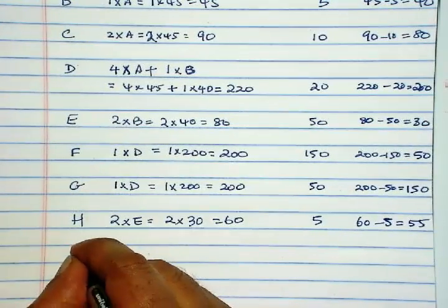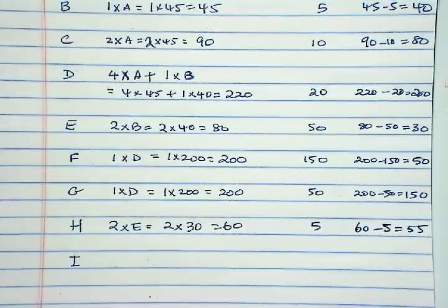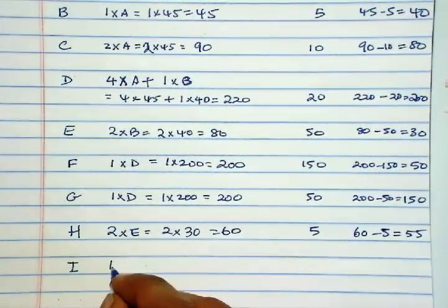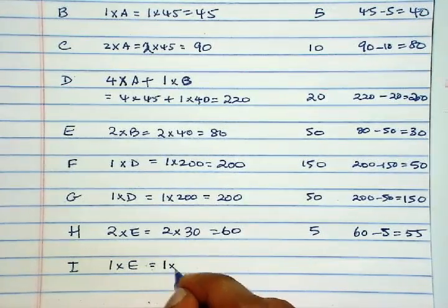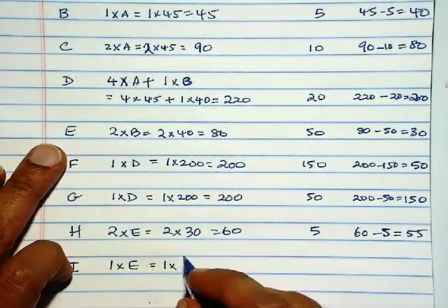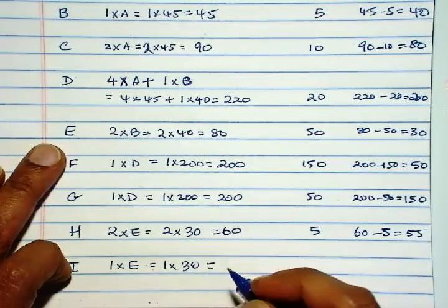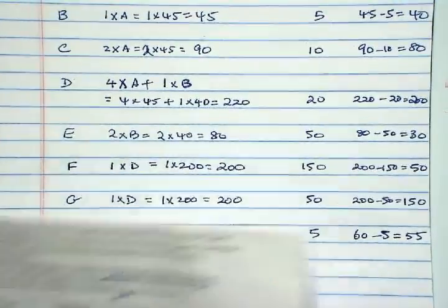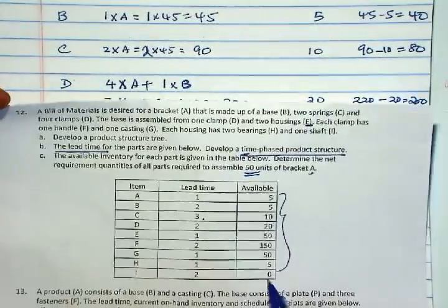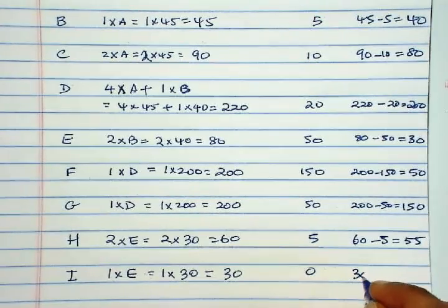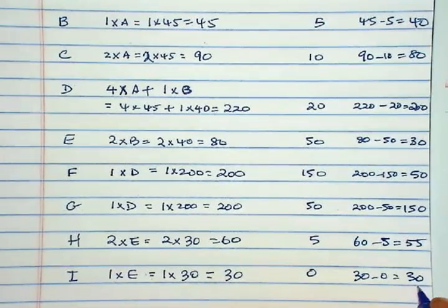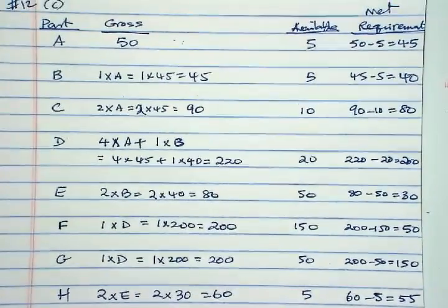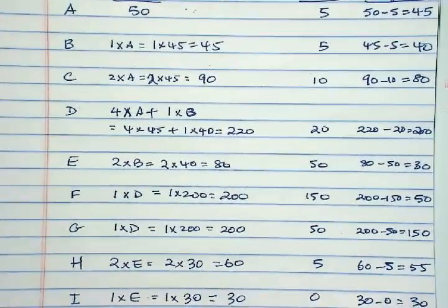And finally, I. And I, we need only one unit of I for each E. So 1 times E is 30. So that is 30. And we have no I's available. So 0. So 30 minus 0 is 30. So this is how you will compute the net requirements for A throughout the inventory.